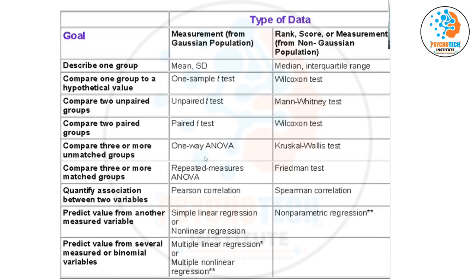And here, compare more than two, then ANOVA if it is parametric, Kruskal-Wallis is non-parametric. If it is pair condition then repeated measure ANOVA. If it is non-parametric then Friedman test.